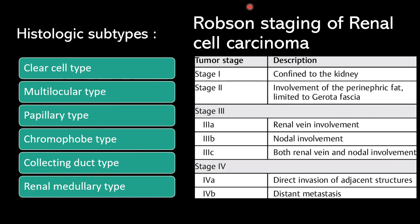Staging of renal carcinoma: Stage 1 is confined to the kidney. Stage 2 involves perinephric fat limited to Gerota's fascia. Stage 3a is renal vein involvement; 3b is nodal involvement; 3c is both renal vein and nodal involvement. Stage 4 is divided into 4a — direct invasion of adjacent structures — and 4b — distant metastasis.